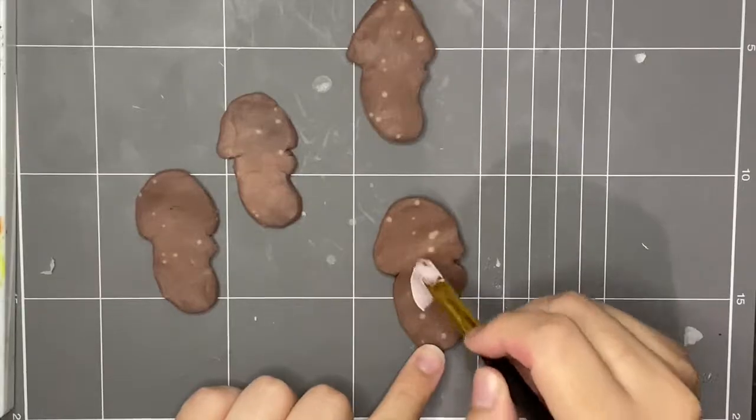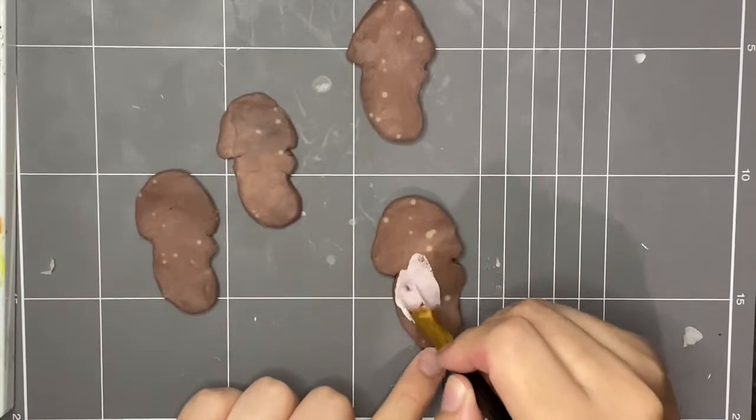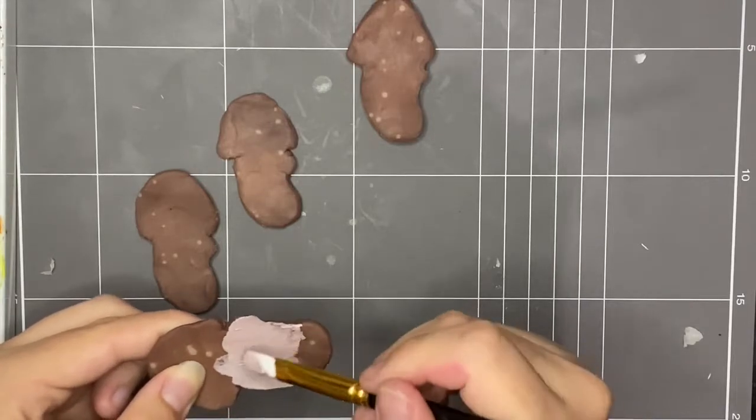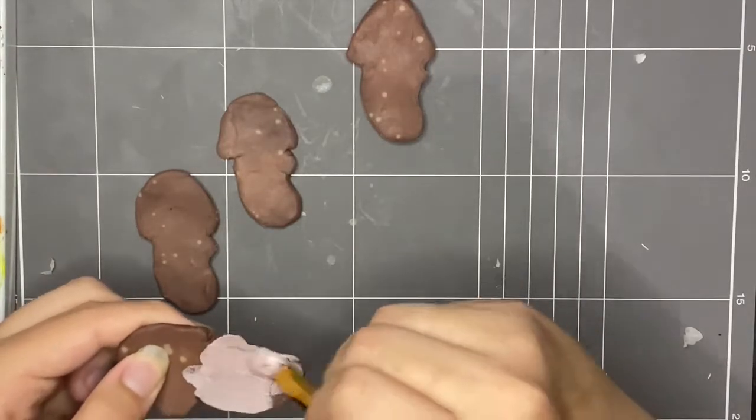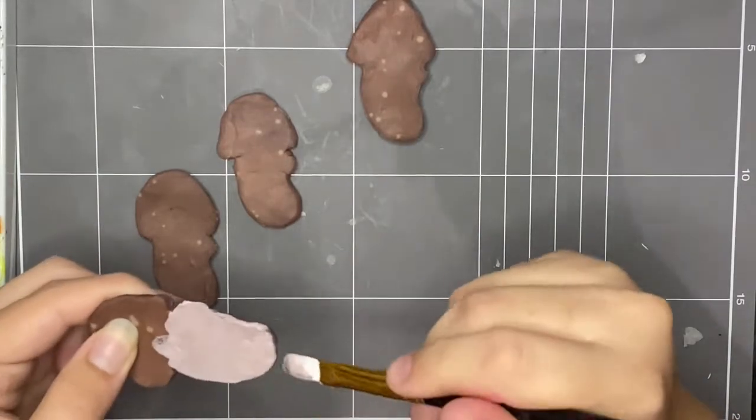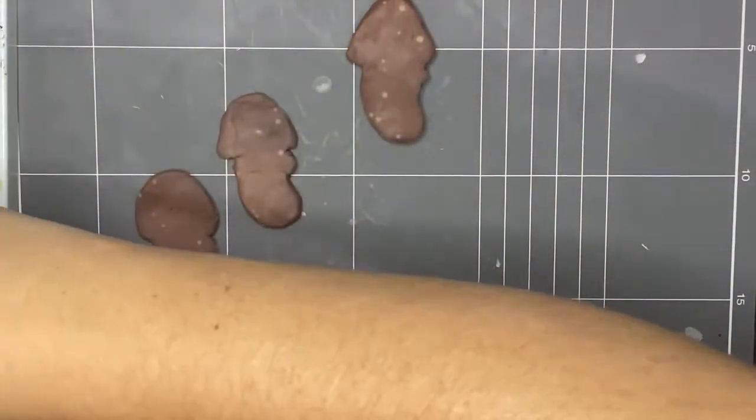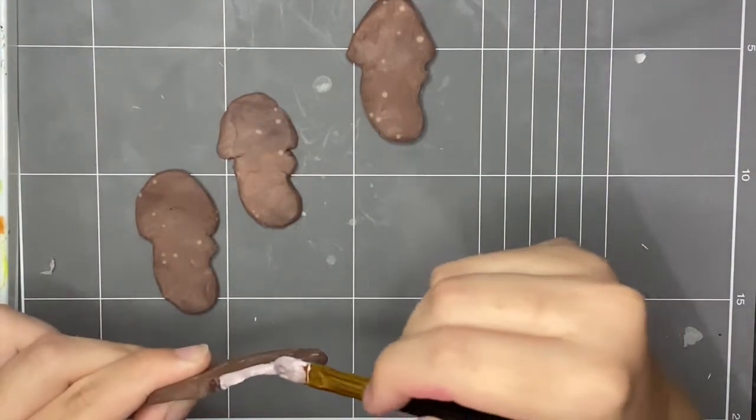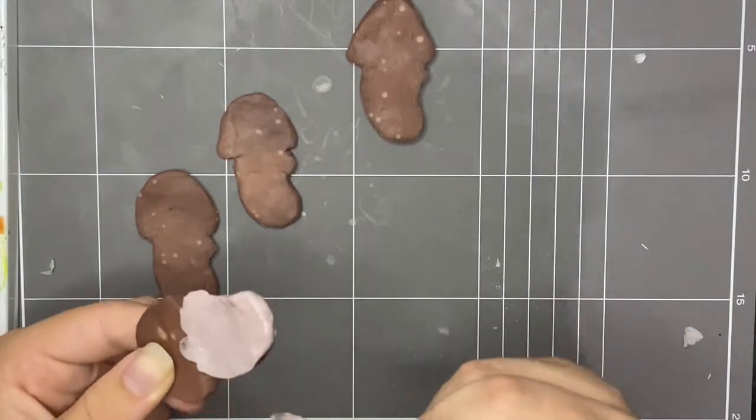But otherwise, apart from the dying specks, they are good. So now it's time to paint these. I'm just going ahead and painting all the bottoms of the mushrooms with this color. And then I'm doing the edges as well, but I'm not going to do the backs because I don't want this design on the back.